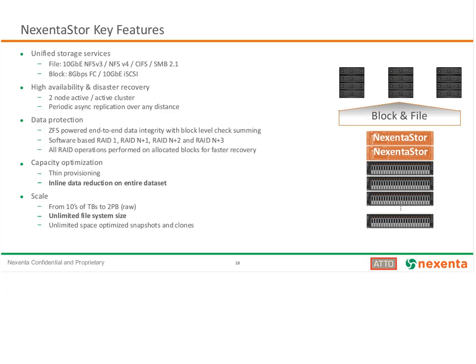By default, we perform data reduction on all data on the system: thin provisioning, inline compression, and an option for inline deduplication. The system scales from a couple of terabytes — the smallest MetroHA we deployed in Central Europe was an 8-terabyte system for a healthcare environment — up to multi-hundred terabyte or multi-petabyte environments.